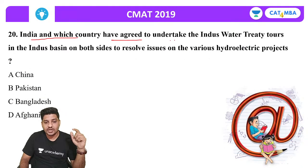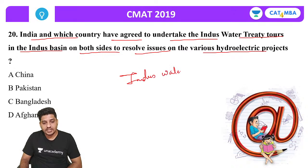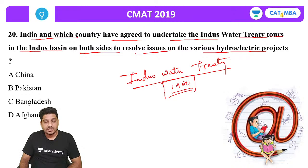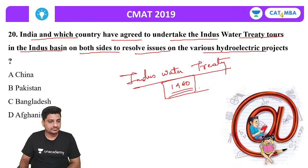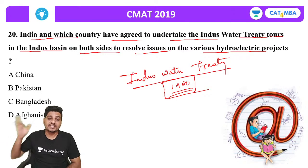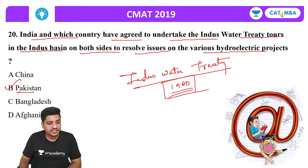Next question: India and which country have agreed to undertake the Indus Water Treaty in the Indus Basin to resolve issues on various hydroelectric projects? The Indus Water Treaty was signed in 1960. The correct answer is Pakistan.